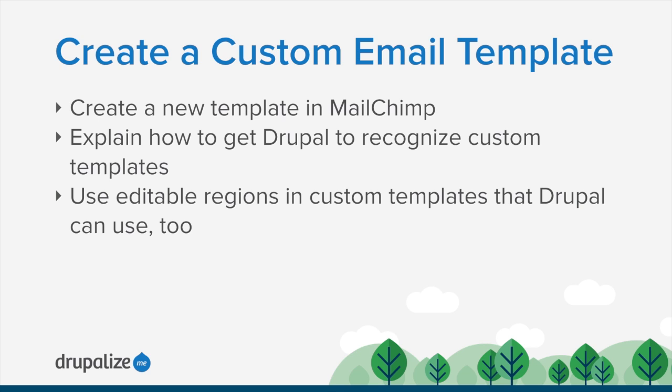We'll also make sure that the editable regions in our template are recognized by Drupal so you can add content into them. I'm going to assume that you've got some basic HTML knowledge since we'll be editing the HTML email template, and that you've at least seen the interface for sending a MailChimp campaign through Drupal. By the end of this tutorial, you should be able to create a custom template in MailChimp, have it show up as an option in Drupal, and understand how to edit your template's code to include editable regions that Drupal will display for editors.